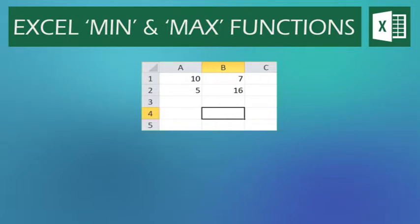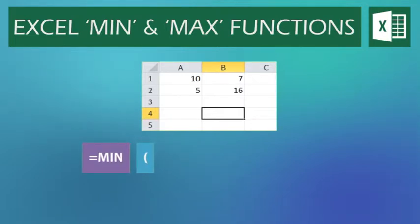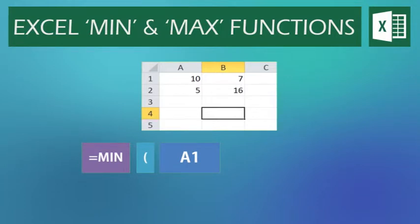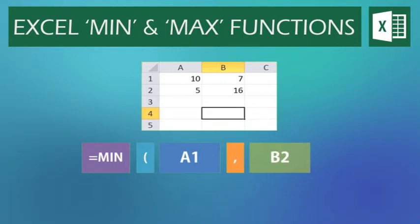In this example, I want to know which cell has the smallest value, either cell A1 or cell B2. To do this, I would start the formula in the same way as before. It asks for the first value, in this case it's going to be cell A1. Then I type a comma to move on to the next part, and then we type the next value, in this case B2. I then close the brackets to finish the formula.